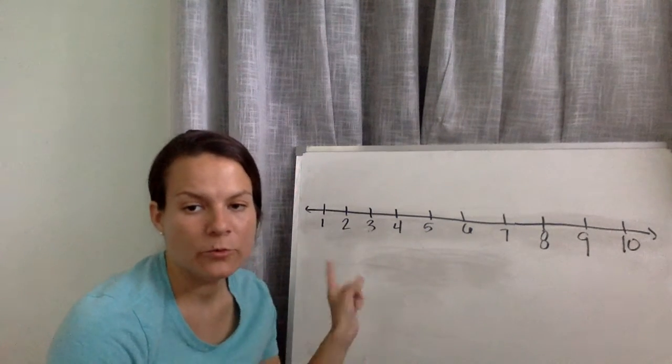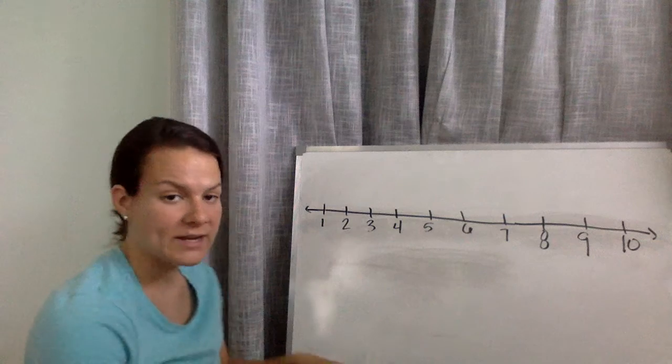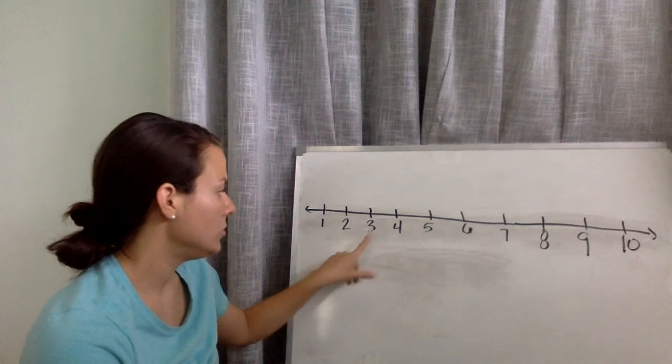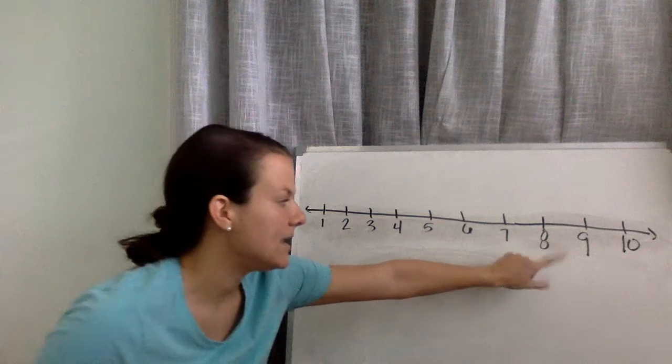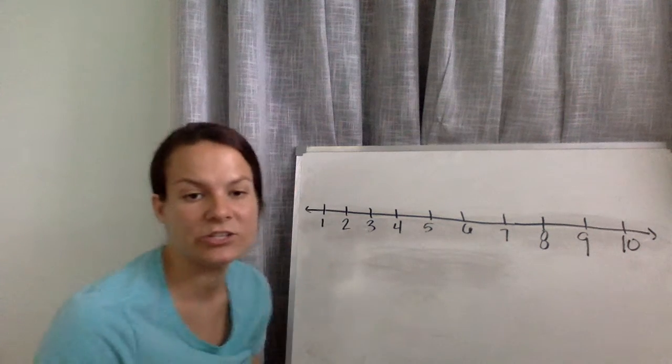Now, I've got my number line written from 1 to 10. Let's count our numbers. Ready? 1, 2, 3, 4, 5, 6, 7, 8, 9, 10. Good job.